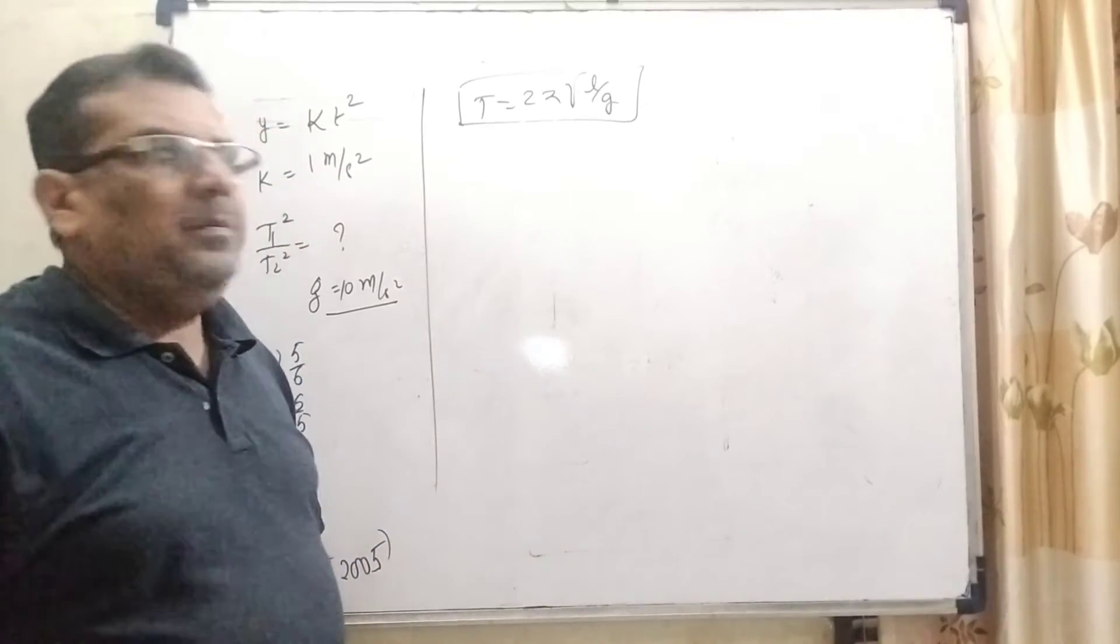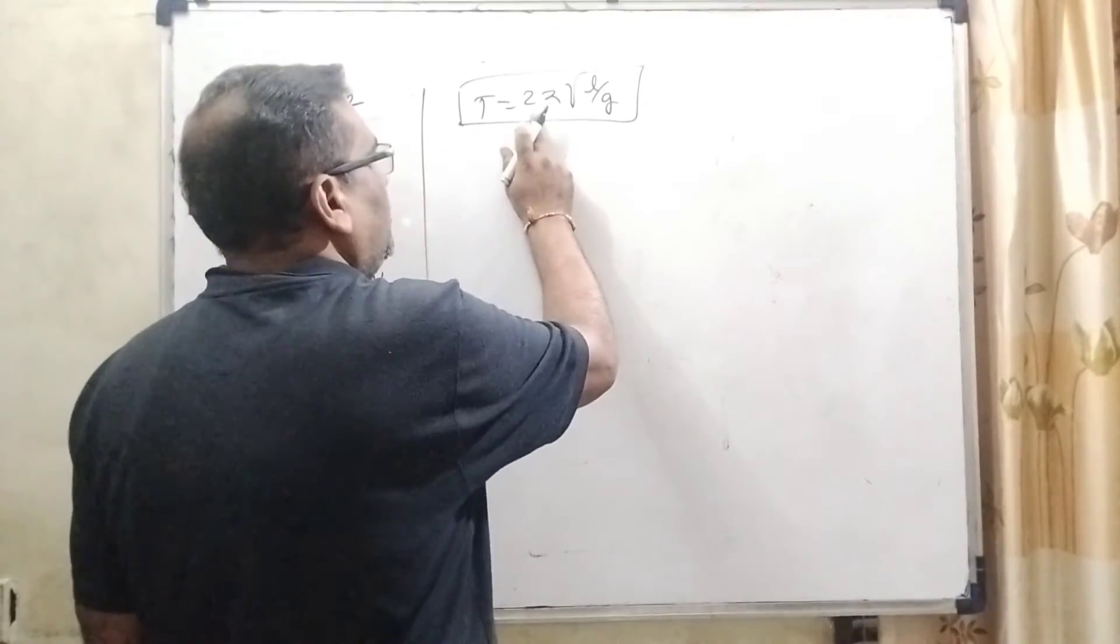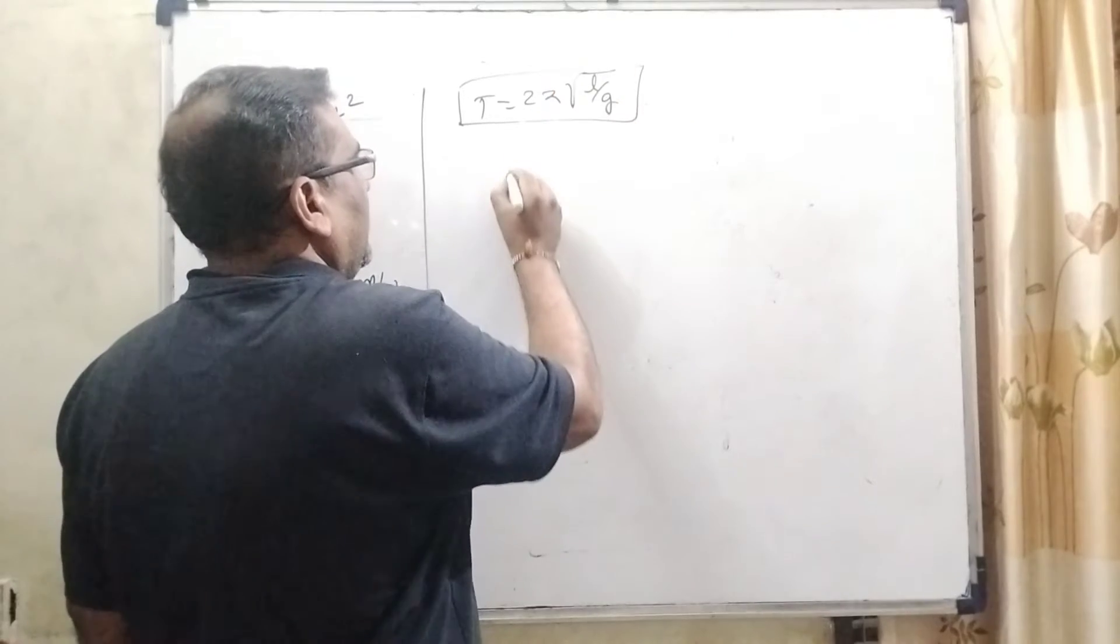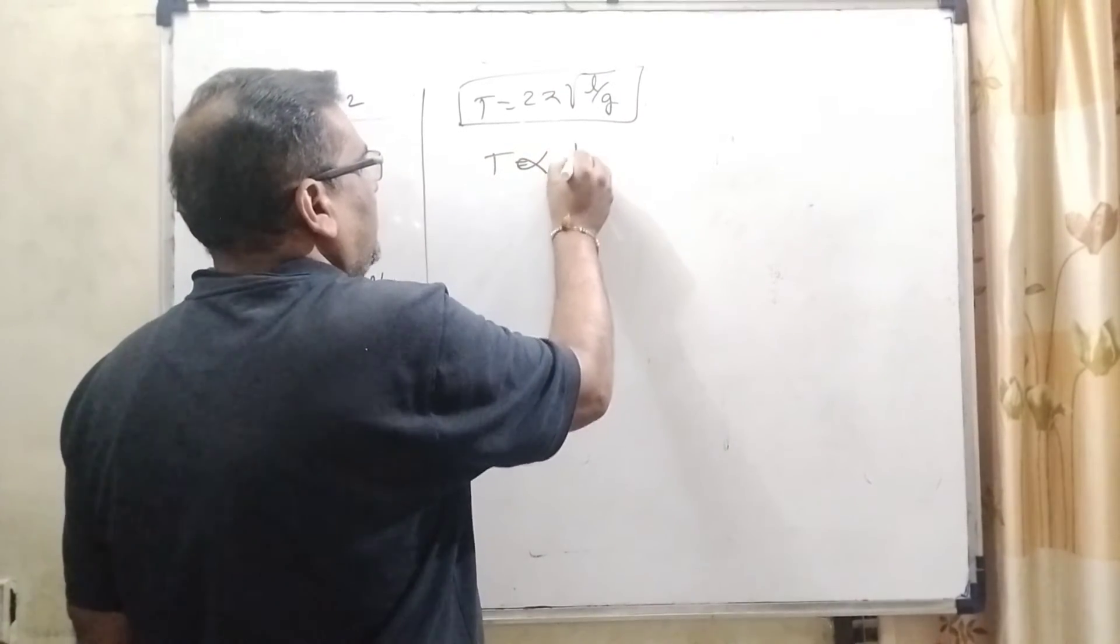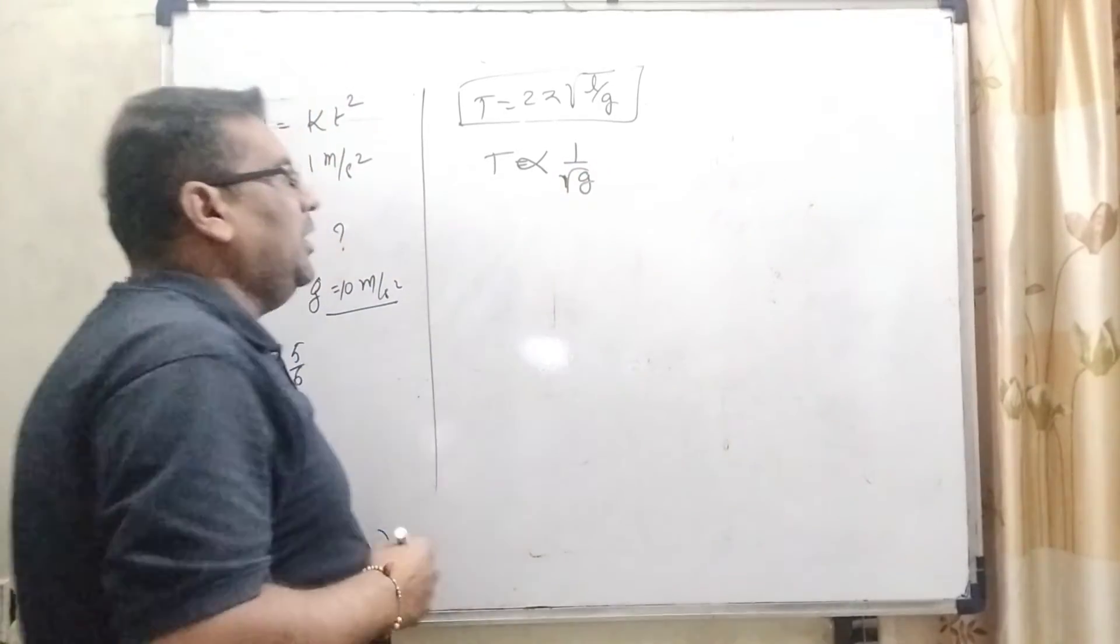Here, key point of this question, we are using this formula T equal to 2 pi root L by G. It means T is inversely proportional to the root G.